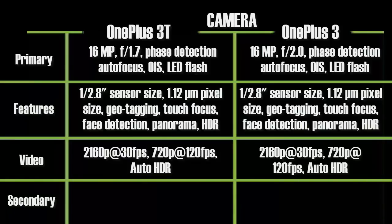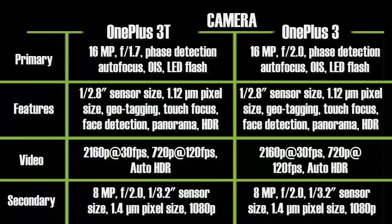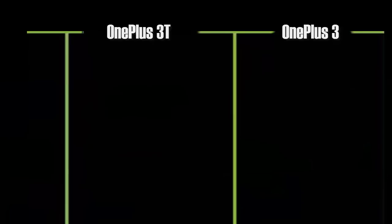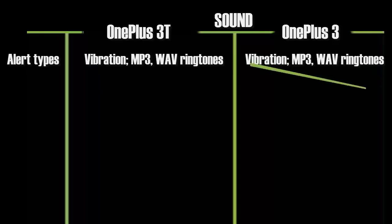Talking about the front camera, the front cameras of both phones are exactly the same — there is no difference between the OnePlus 3T and OnePlus 3 front cameras. Both phones have a 3.5mm headphone jack and both support active noise cancellation.